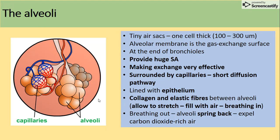The alveoli are tiny air sacs, many of which are one cell thick, so the alveolar membrane is the gas exchange surface. They are found at the end of the bronchioles. Their adaptations include providing a huge surface area to volume ratio, making gas exchange very effective. As you can see in the picture, many blood capillaries surround them, providing a short diffusion pathway.